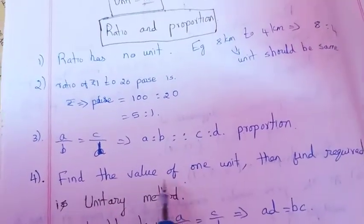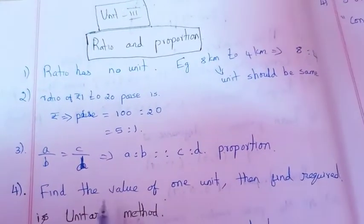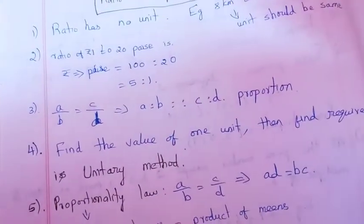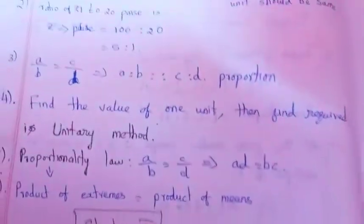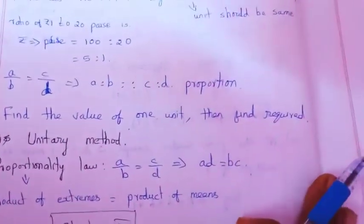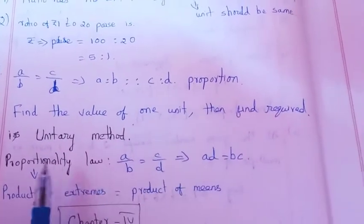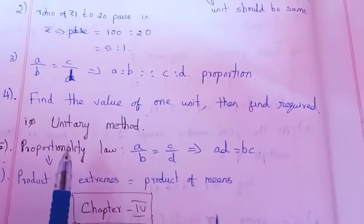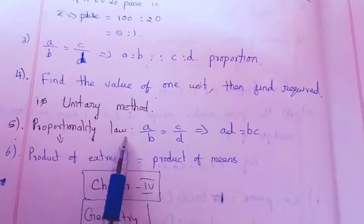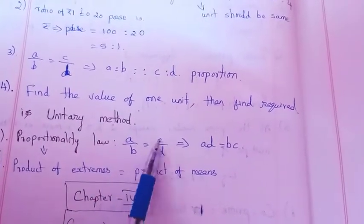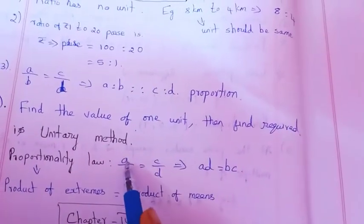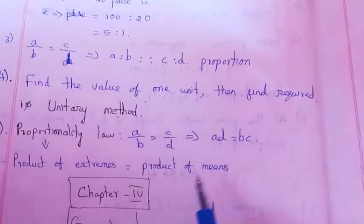Find the value of one unit, then find required. This is the unitary method. Proportionality law: a over b equals c over d, so ad equals bc. Product of extremes equals product of means.